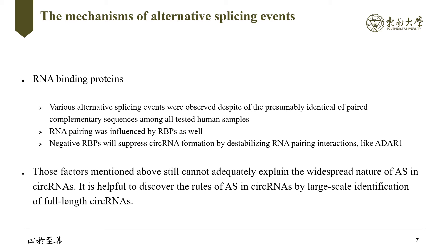Previous studies showed that RNA pairing was influenced by RNA binding proteins as well. Negative RNA binding proteins suppress circular RNA formation by destabilizing RNA pairing interactions. Nevertheless, those factors mentioned above cannot adequately explain the widespread nature of alternative splicing in circular RNAs.